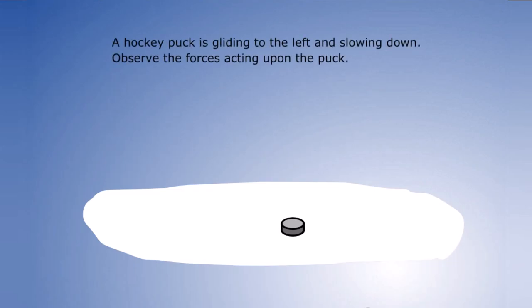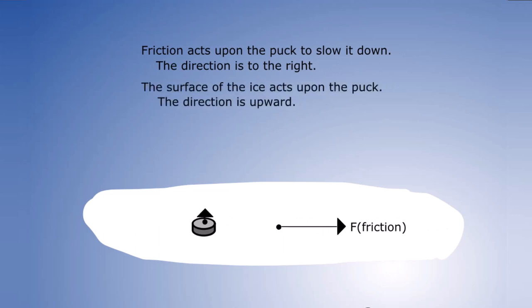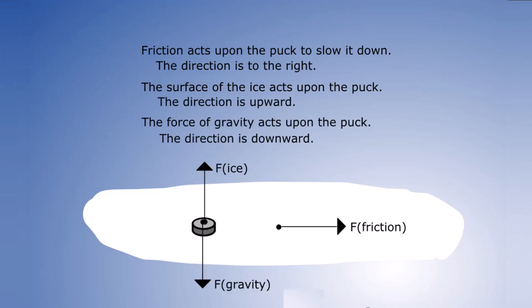Example 4. A hockey puck is gliding to the left and slowing down. Observe the forces acting upon the puck. Friction acts upon the puck to slow it down. The direction is to the right. The surface of the ice acts upon the puck. The direction is upward. The force of gravity acts upon the puck and the direction is downward.